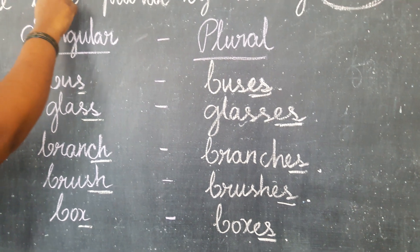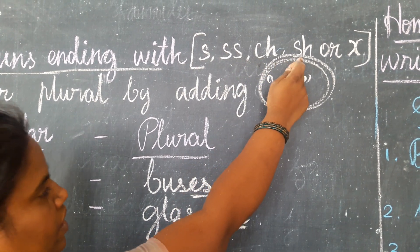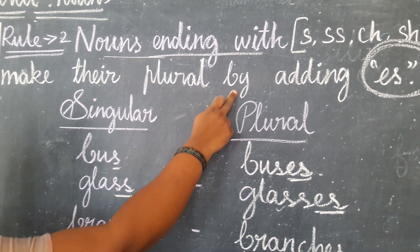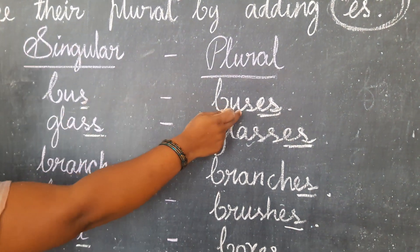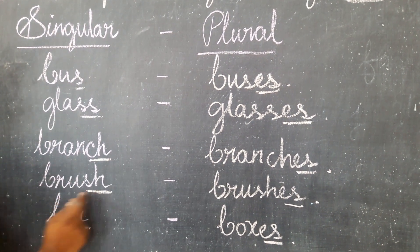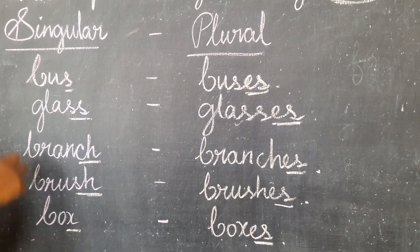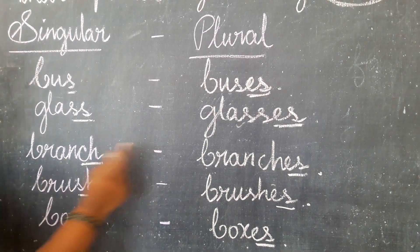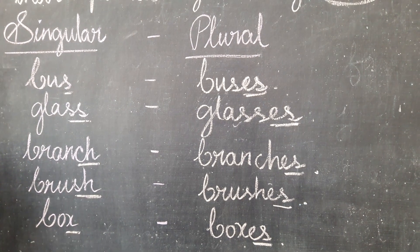Once again: nouns ending with S, SS, SH, CH or X make the word plural by adding ES. See the examples: bus — buses, glass — glasses, branch — branches, brush — brushes, box — boxes. It is clear, children.